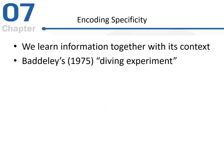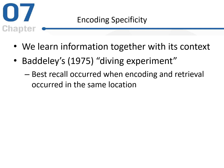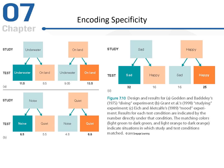With encoding specificity, this is suggesting that we learn information together along with the context in which we're learning it. We can see this in Baddeley's 1975 study, known as the diving experiment. What they found was that the best recall of information occurred when encoding and retrieval occurred in the same location. Participants who studied underwater and were tested underwater did better than those who studied underwater and were tested on land. And this same effect held across all conditions — if someone studied on land, they did better when tested on land than when tested underwater.